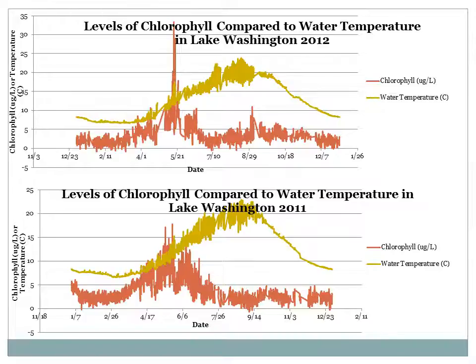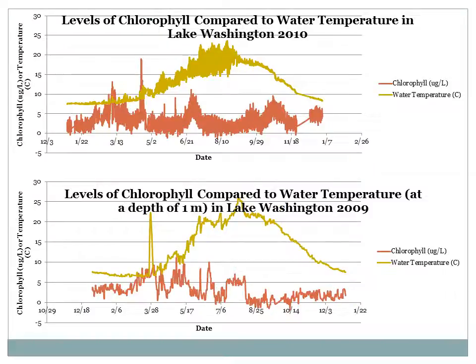I assumed that algal growth was directly correlated to water temperature, but the graphs I created from 2011 and 2012 data show that the peak chlorophyll levels and water temperature are not aligned. The same is true for the 2009 and 2010 graphs. So clearly there are other factors that affect algae growth, and I decided to research algal growth and blooms.